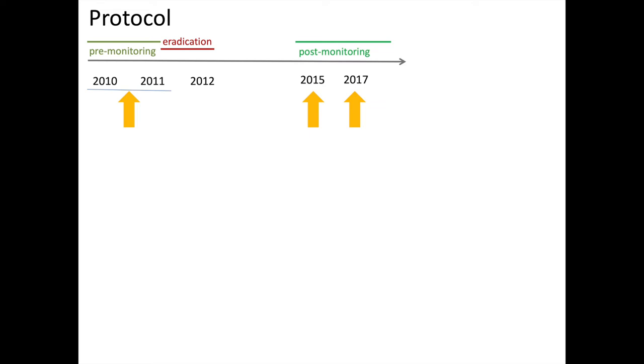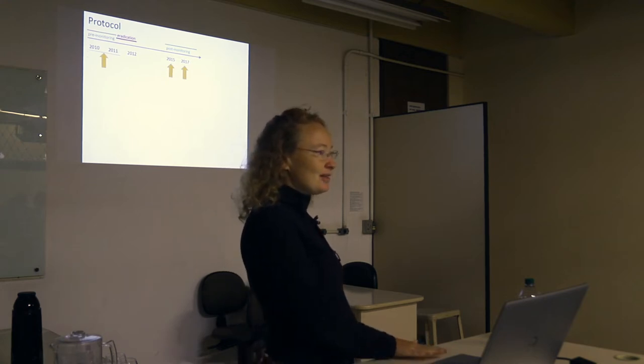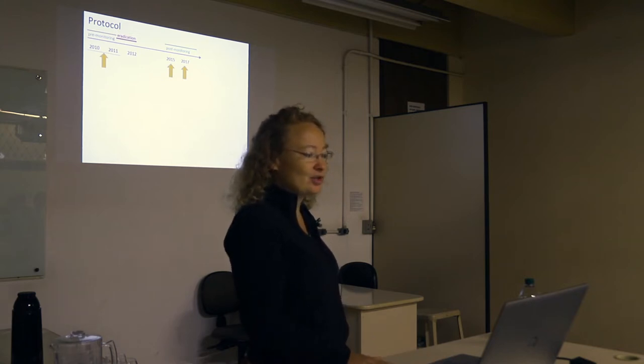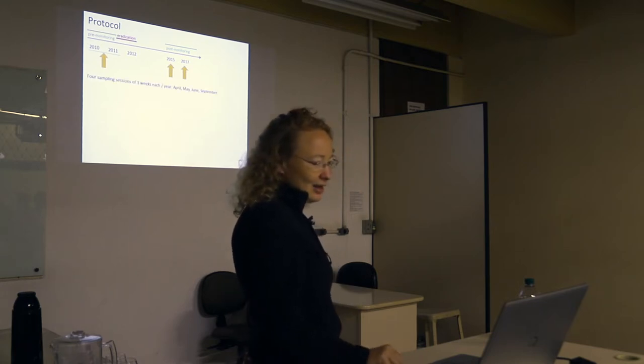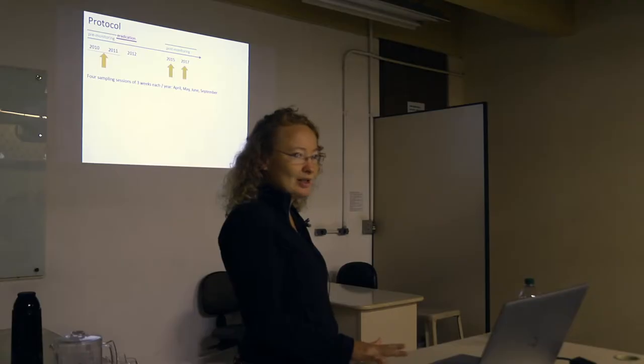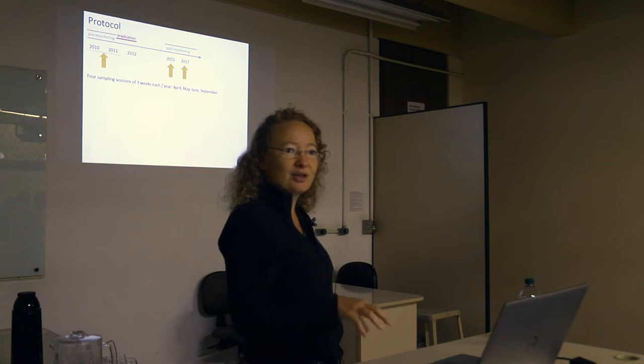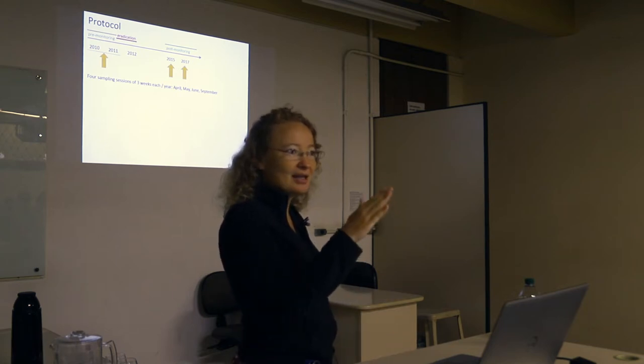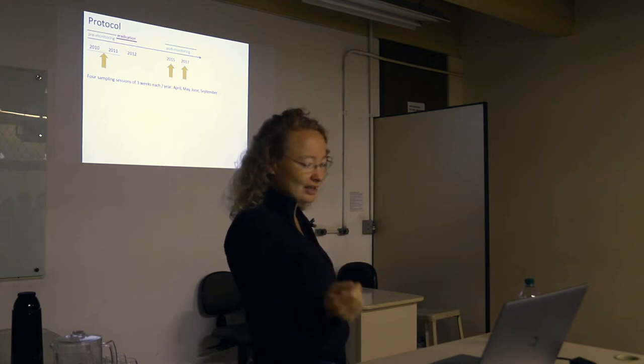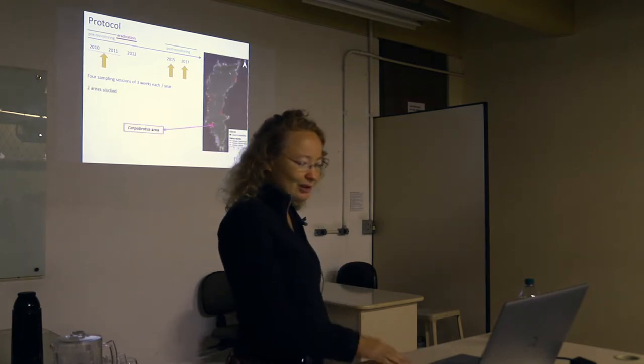What I'm going to show you now is the monitoring we've been doing. There's monitoring before eradication, 2010 and 2011, and monitoring after eradication is 2015 and 17. We're still doing 2019, so I don't have the results yet. For each year we have four sampling sessions of three weeks each. It's April, May, June, and September. April, May, and June are spring and beginning of summer in France, so that's when the arthropods are very active. And September, they kind of are less active during the hot summer of August, and then they start again with the rain in September.